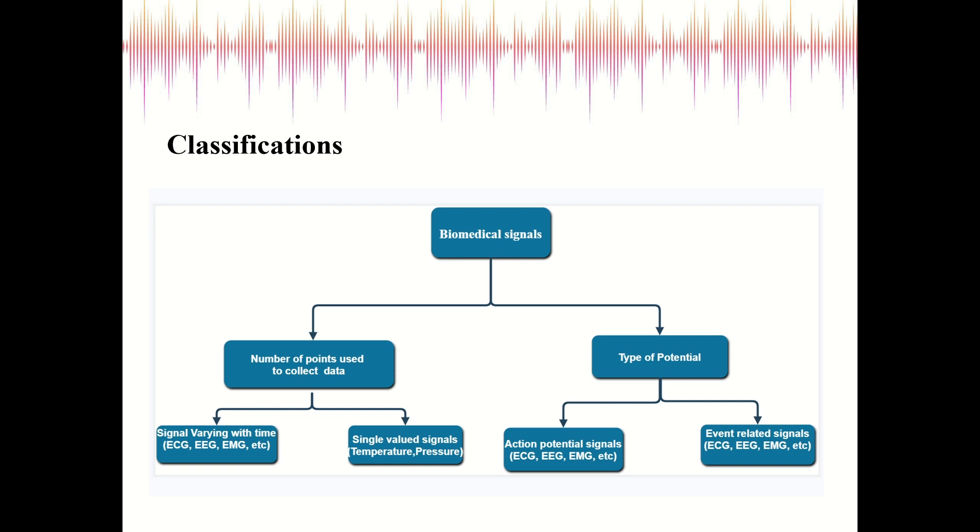The second is EEG (electroencephalography), which is related to our brain. The third one is EMG (electromyogram), which is related to the movement of impulses of skeletal systems. We have different signals that determine the health of our body under signals varying with time.